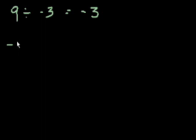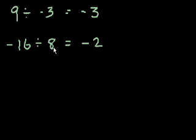What is minus 16 divided by 8? Well, 16 divided by 8 is 2, but the signs are different. Negative 16 divided by positive 8 equals negative 2. Remember, different signs will get you a negative result.